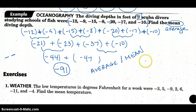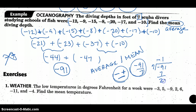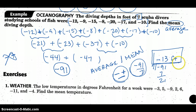Be careful — a lot of students get in a hurry, circle negative 91 as the final answer, and forget we're taking the average or mean. Mean means average. So I take negative 91 and divide by 7. That's a negative divided by a positive — opposite signs — so the answer is negative. 7 goes into 91 thirteen times. Our average depth is negative 13 feet.